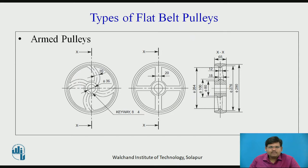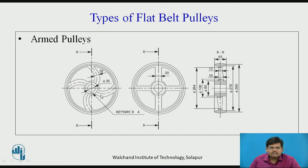The first type of flat belt pulley is the armed pulley, as you can see on the screen. This part of the pulley is called as the hub or boss, and you can see a keyhole over here. The outer part is called as the rim. The hub or boss and the rim are connected with the arms. The part between two arms is hollow — there is no material between these two parts. Depending upon the application and size, the arm may be straight or in a circular format.